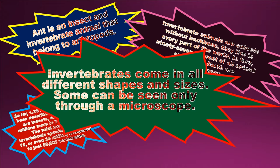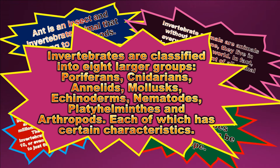Invertebrates are classified into eight larger groups: Porifera, cnidarians, annelids, mollusks, echinoderms, nematodes, platyhelminthes, and arthropods. Each of which has certain characteristics.